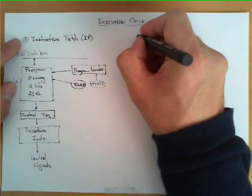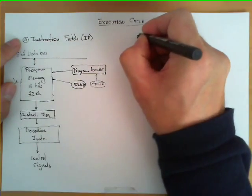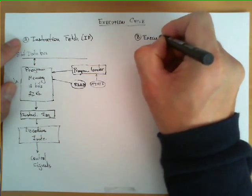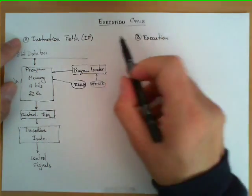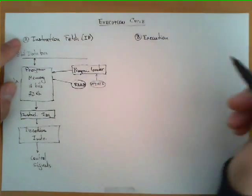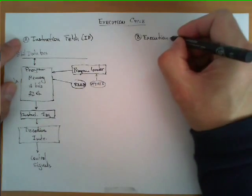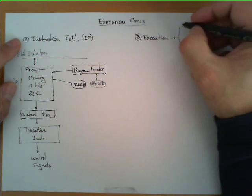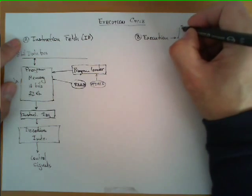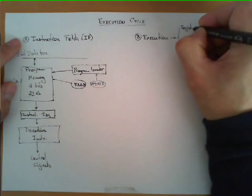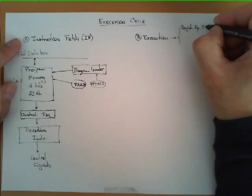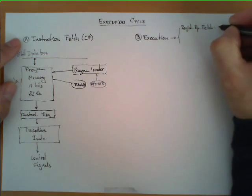The second stage we're going to call the execution itself, part of the execution cycle, which is itself divided into three sub-stages. The first one we're going to call register operand fetch, which we'll abbreviate as ROF.